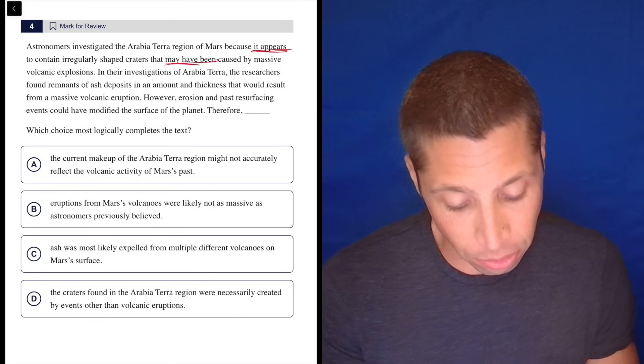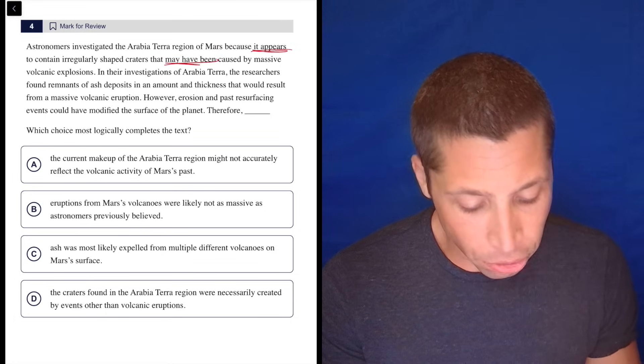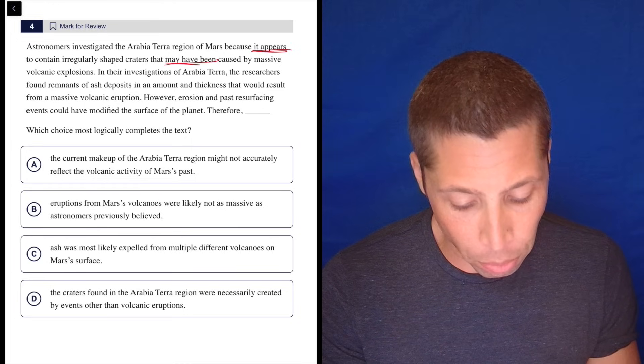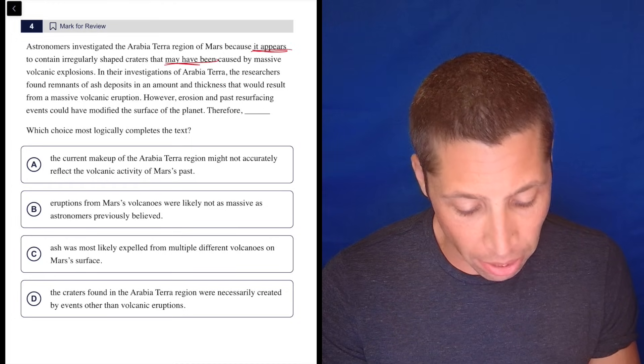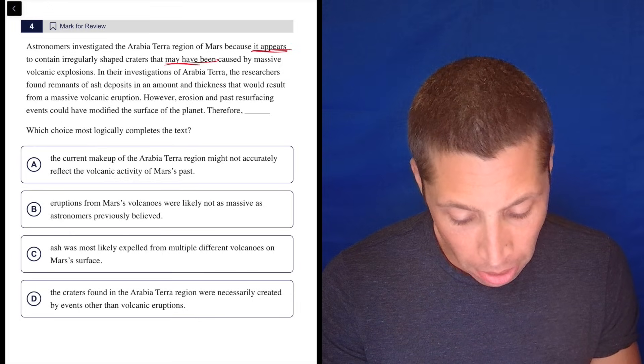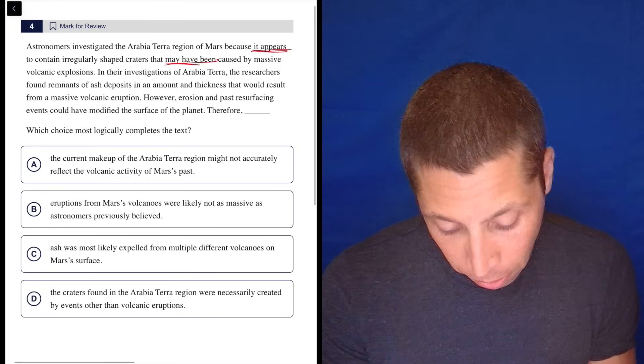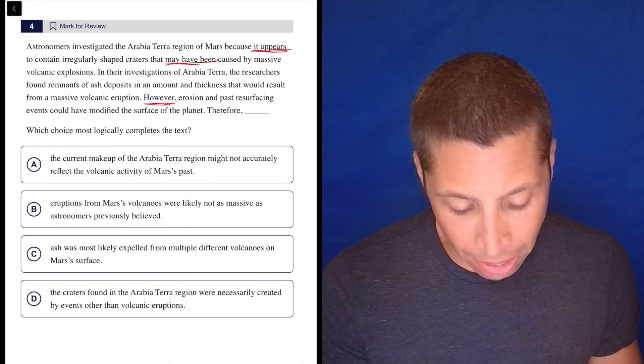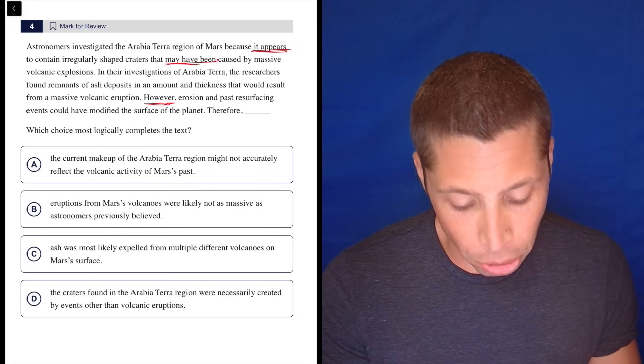And may have been caused, right? So that's also kind of vague. In their investigations of Arabia Terra, the researchers found remnants of ash deposits in an amount and thickness that would result from a massive volcanic eruption. However, however, always important words, erosion and past resurfacing events could have modified the surface of the planet.